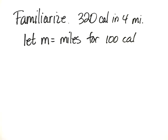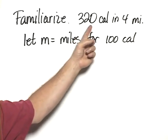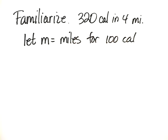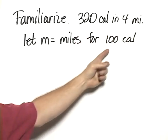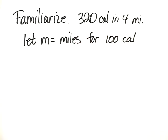First, let's familiarize ourselves with the information. The adult burns 320 calories in 4 miles. We want to know, and we will let m equal the number of miles in order to burn 100 calories.